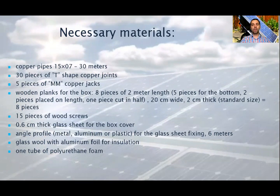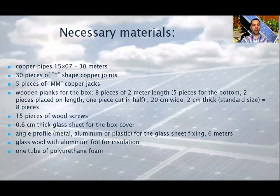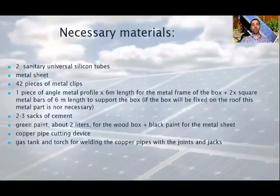You need to buy some wooden planks for the box — 8 pieces of 2 meters length, 2 pieces for the bottom, 2 pieces placed on length, and 1 piece cut in half. They should be 20 cm wide and 2 cm thick. You need some wood screws as well. A 0.6 cm thick glass sheet for the box cover. Some angle profile — metal, aluminum or plastic — for the glass sheet fixing, approximately 6 meters. Glass wool with aluminum foil for insulation, one tube of polyurethane foam, some silicone tubes for insulation purposes, some material for supporting the device, and of course, some tools for building it.